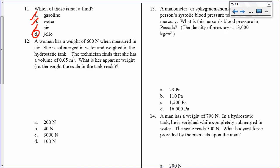A woman has a weight of 600 newtons when measured in air. She is submerged in water and weighed in the hydrostatic tank. The technician finds that she has a volume of 0.05 cubic meters. What is her apparent weight? So, I have this lady. She is on a scale. And that scale, she's submerged in water. She has some forces acting on her. She has her buoyant force. She has her weight. She also has the force that the scale is reading. And that's what I want to know.